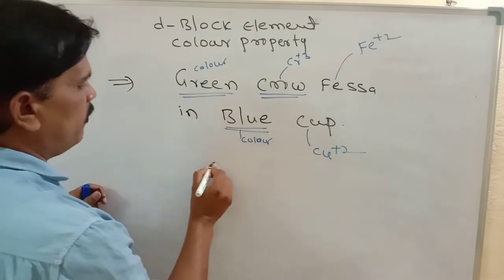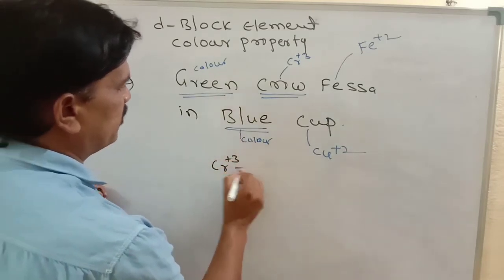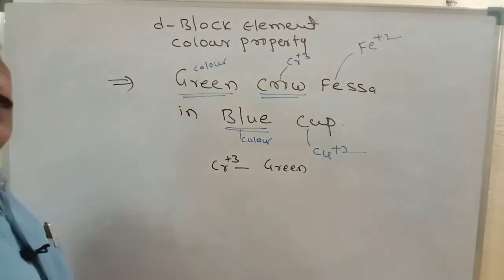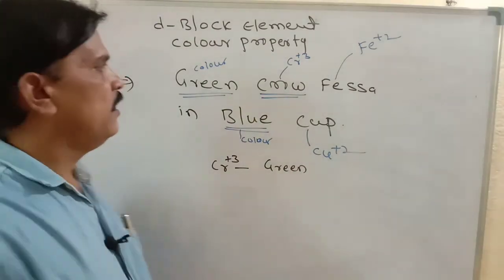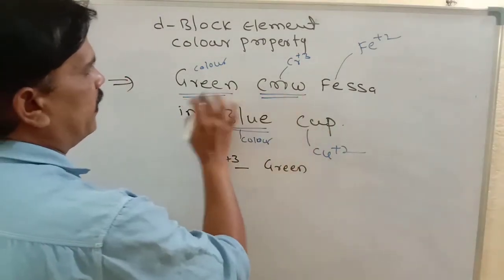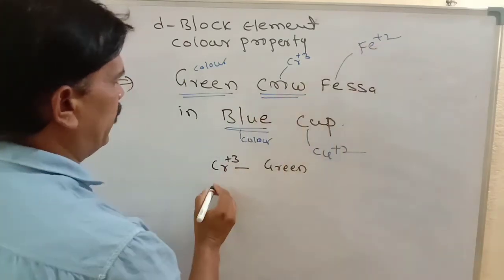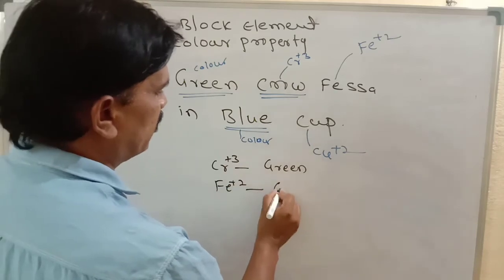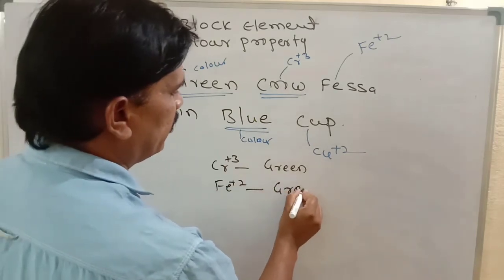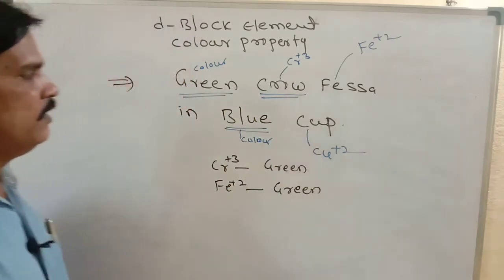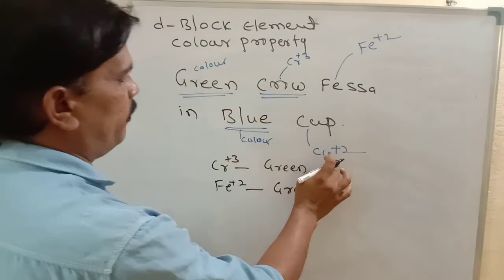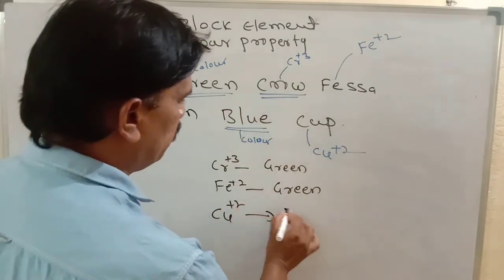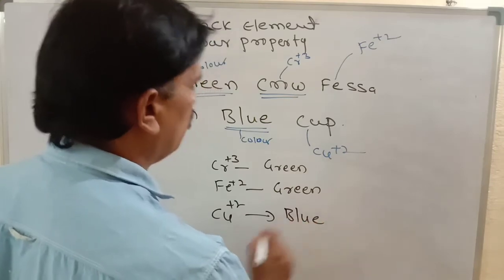So: Chromium³⁺ is in green color. Iron²⁺ (ferrous) is also in green color. Copper²⁺ is in blue color — this includes copper sulfate (CuSO₄·5H₂O, also called blue vitriol), which is always in blue color because copper is in the +2 state.